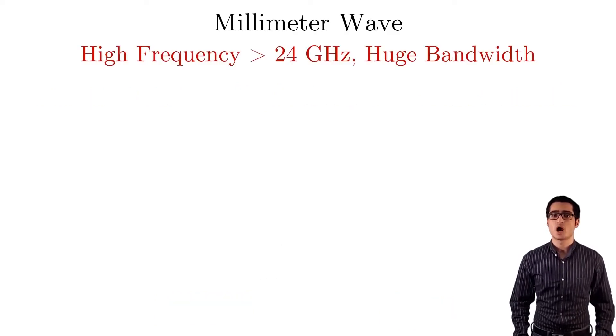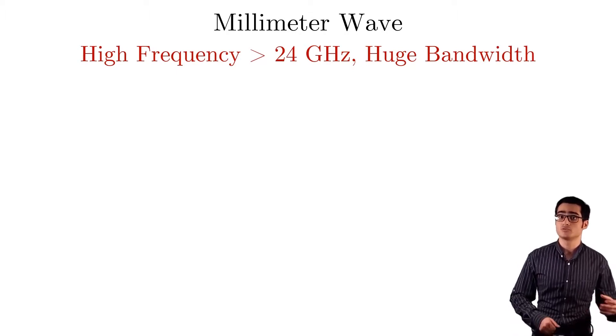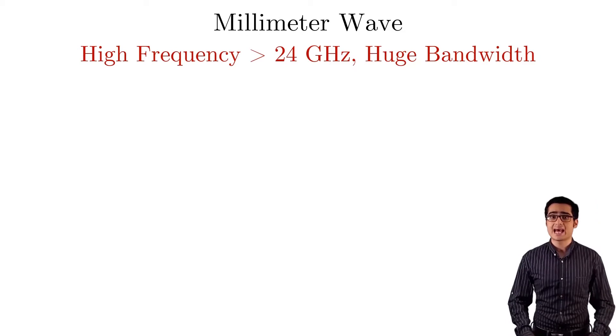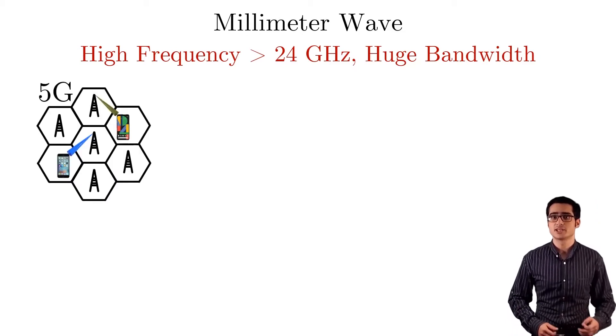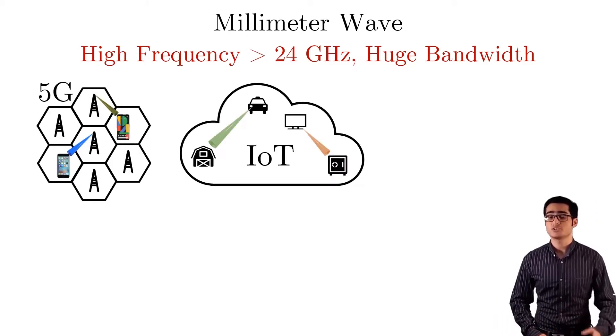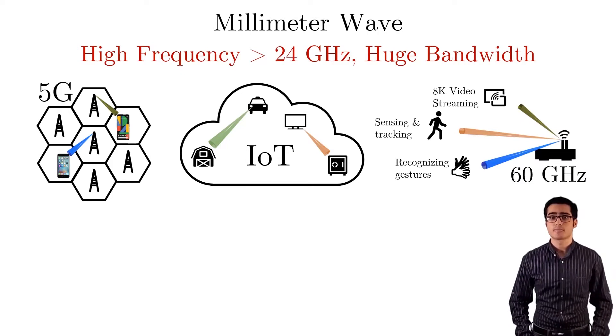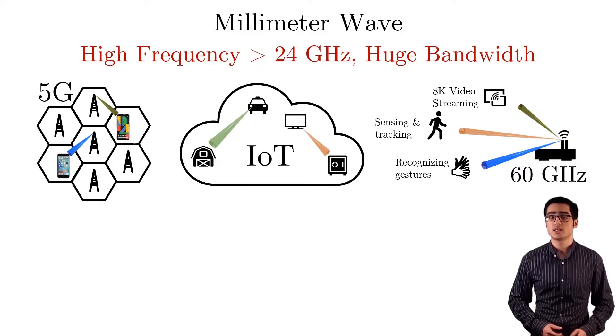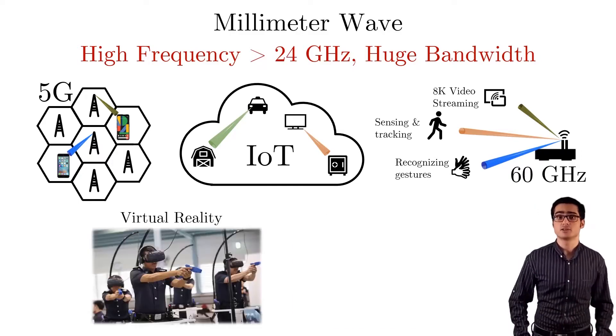mmWave refers to high frequency communication above 24 GHz where there's plenty of bandwidth. It has been the centerpiece of 5G cellular networks, many IoT applications, and next generation wireless LANs. It also promises to deliver high data rate applications like virtual reality and connected vehicles.